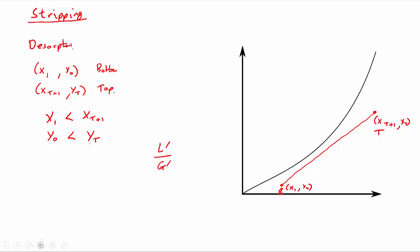In exactly the same way as with scrubbing, we start from X_1, Y_0 and go to the equilibrium line, then to the operating line, continuing exactly like the McCabe-Thiele style for distillation until we reach a composition better than what we require for the top of our column. In this case we count one, two, three, four, five, six, seven equilibrium stages needed for this stripping operation.